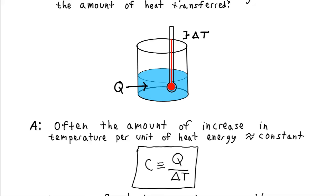In actuality this isn't quite constant — it will tend to vary somewhat. And when we change phases, such as when we boil water and convert it from liquid into gas, this equation doesn't work at all. The heat energy doesn't go into changing the temperature anymore; it goes into rearranging the structure of the molecules. But over certain ranges, this is a pretty good approximation for a lot of materials.